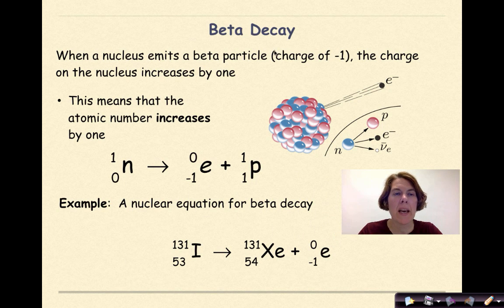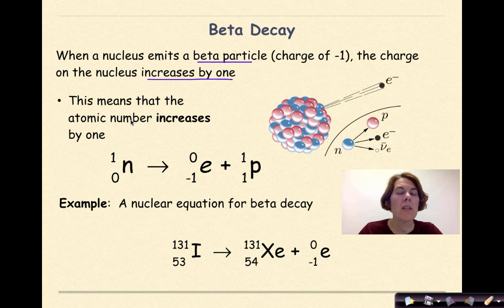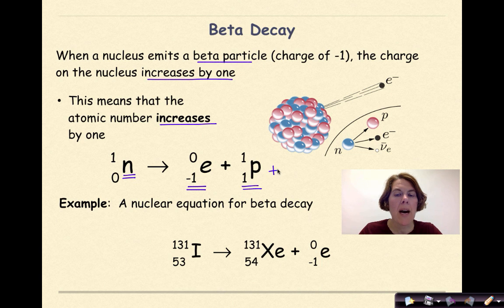Now let's talk about beta decay. When a nucleus emits a beta particle, which will have a charge of negative 1, the charge on the nucleus increases by 1. This means that the atomic number increases by 1. So here's my neutron. When a beta particle is emitted, and here's my beta particle right here, the neutron is going to transform into a proton. And we know that protons are positive; they have a positive charge associated with them. Notice here that the mass number doesn't change because, frankly, electrons are extremely light. The neutron is originally neutral, so if it undergoes beta decay, it's going to release a negative particle, making this new particle positive.